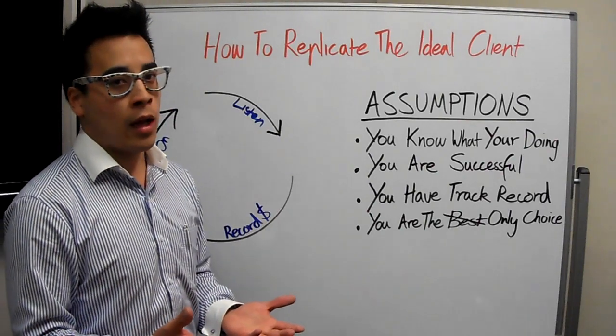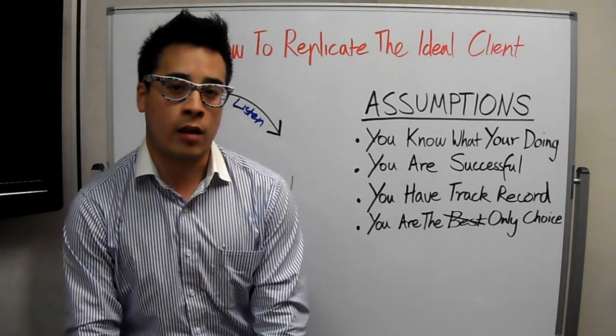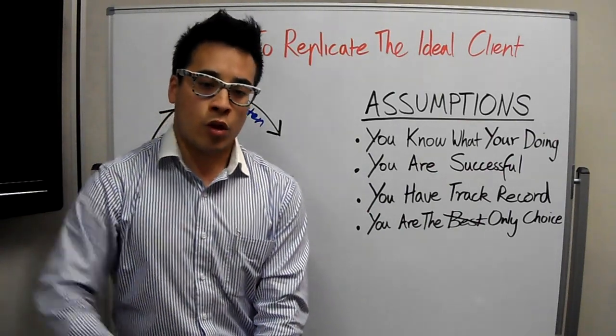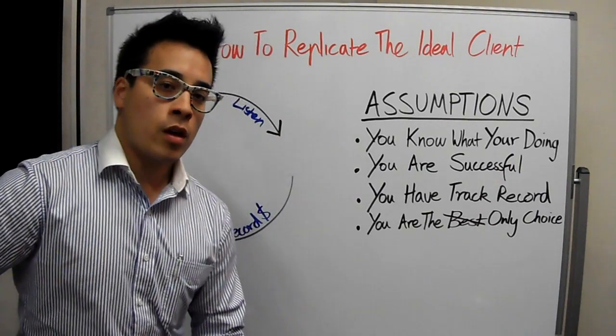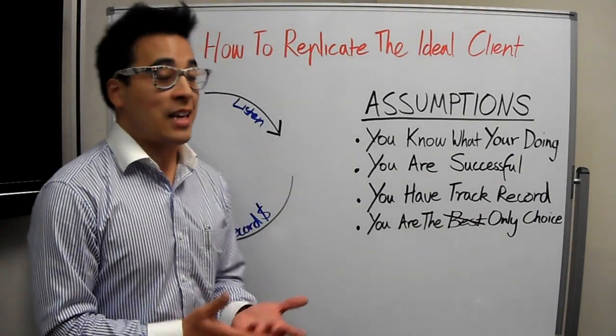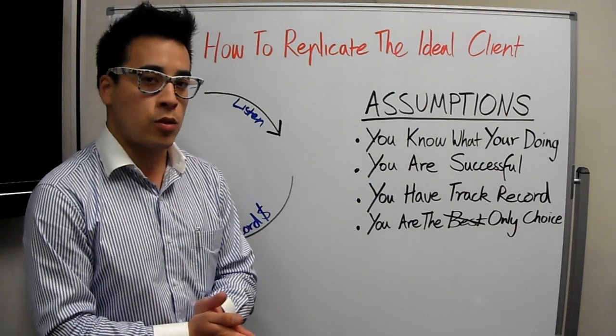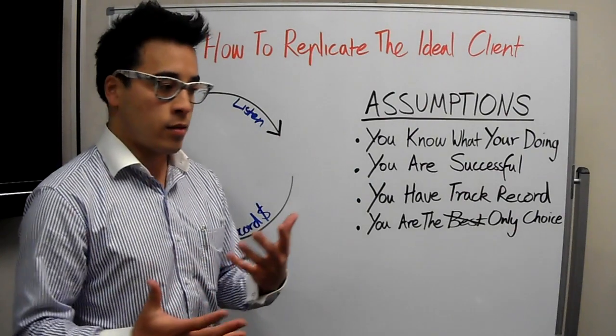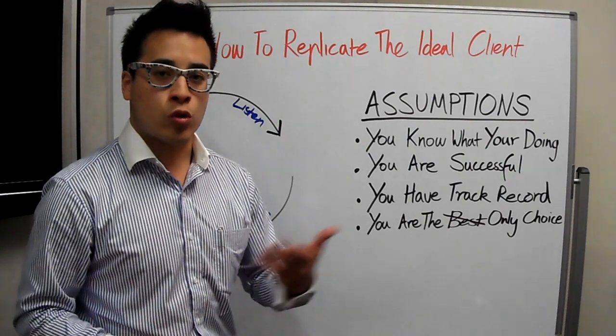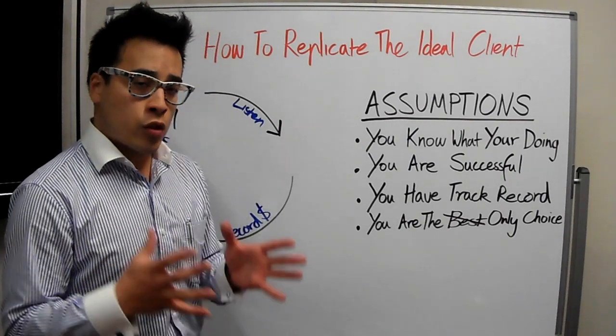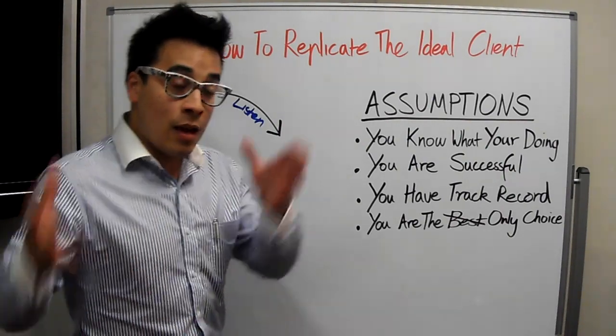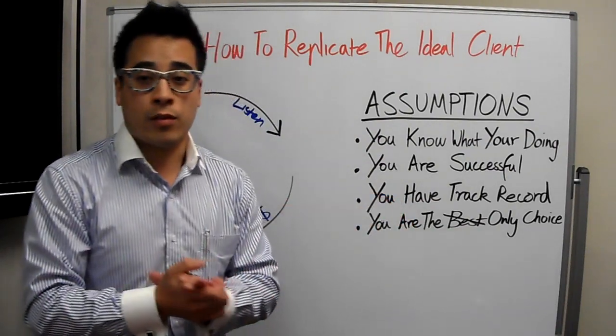Now, a listing presentation starts well before you're actually at their dining room table, because you don't want to be going against other agents. A listing presentation starts at least six months. Most people start searching the market about six months before they're ready to sell. They start looking at sales in the area, going to open for inspections, going to auctions. So you need to be in their mind six months before they're ready to sell.